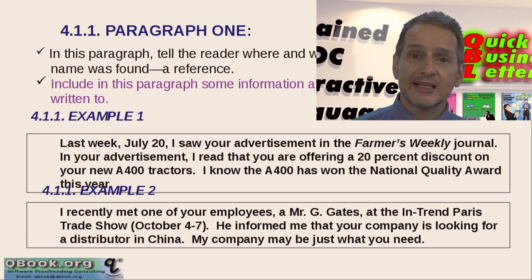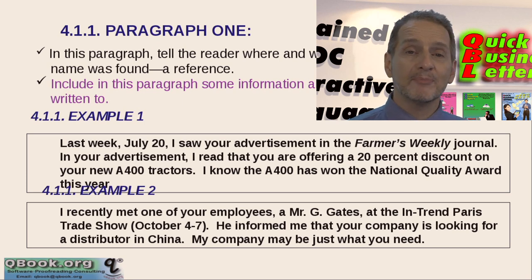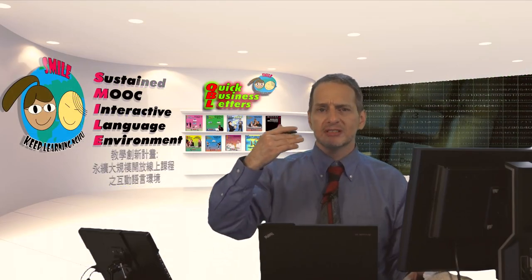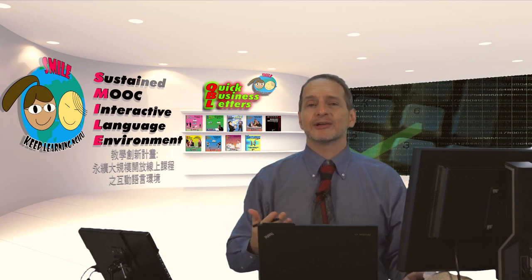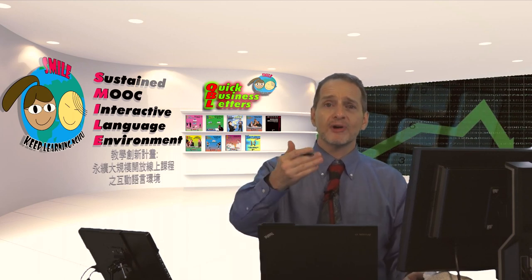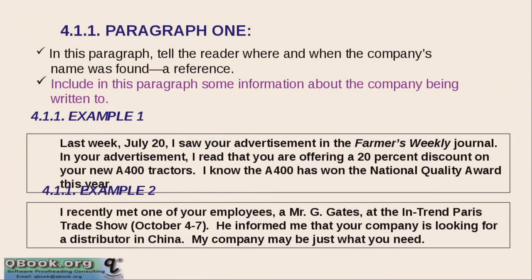Maybe you don't really know this person, so you can say something like 'I know about your company' or 'I've heard of your company.' These are ways to show how you know something about them. When the reader sees this, they'll think 'you already know something about me, so I should read more of the letter.' In your QBL online there are examples for each paragraph, so look at those carefully.